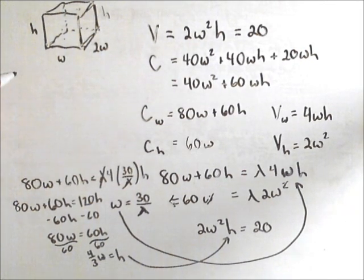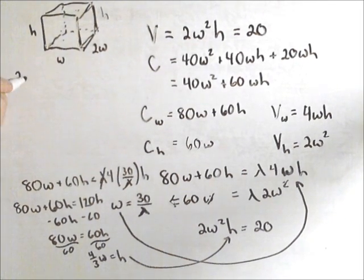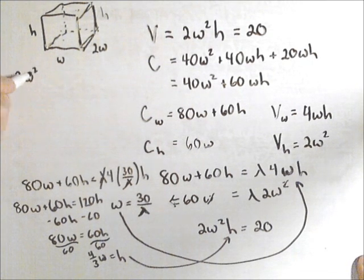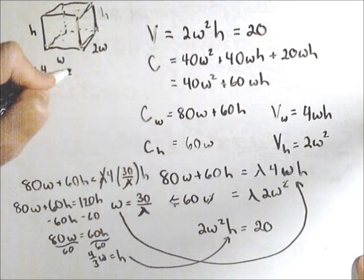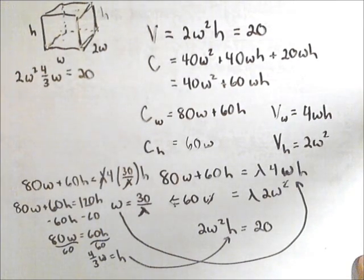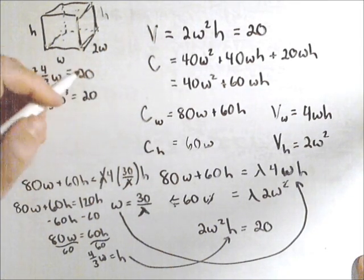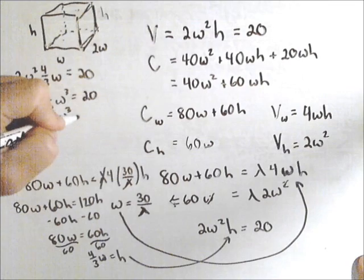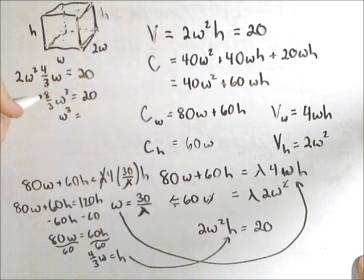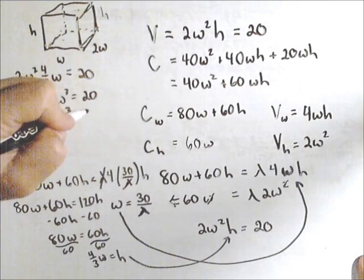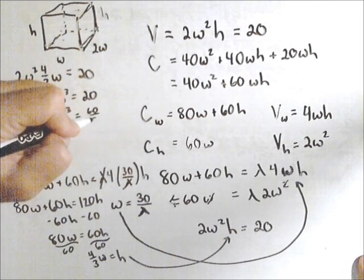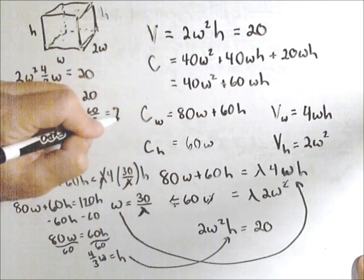So we have 2W² times 4 thirds W equals 20. So what I have is 8 thirds W³ equals 20, or the W³ equals, multiply both sides by 3 eighths, and I'll get 60 over 8, or 7.5.